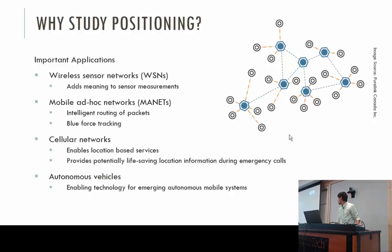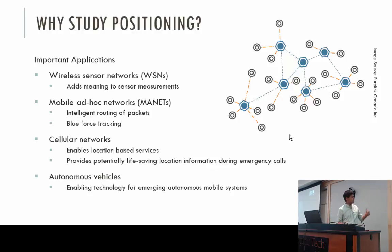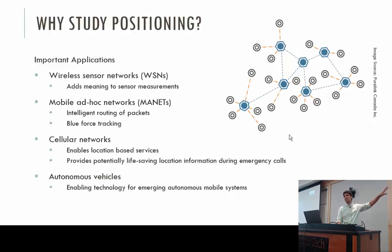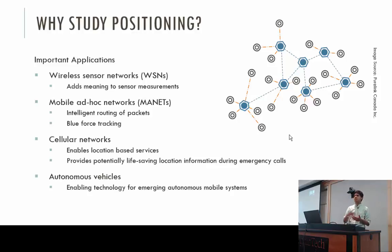Consider a wireless sensor network: you have a sensor out in a field somewhere giving you a certain reading, but that reading is useless unless you know where it was made — it adds meaning to sensor measurements. In mobile ad hoc networks, positioning can be used for the intelligent routing of packets. As devices determine their locations, a subset of centrally located devices can be selected as forwarding points throughout the network.